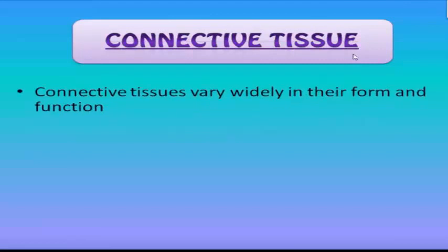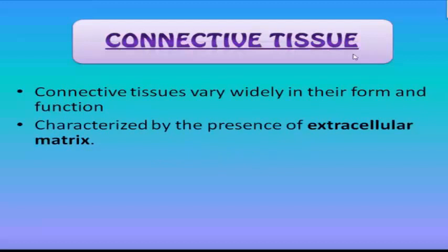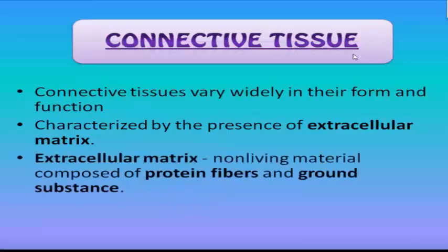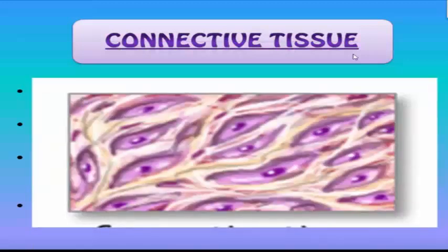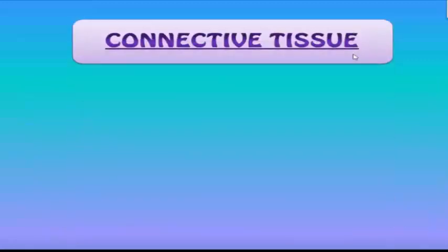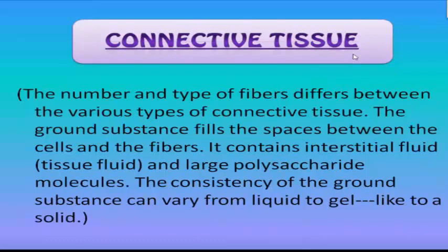Connective tissues vary widely in their form and function. They are characterized by the presence of extracellular matrix — a non-living material composed of protein fibers and ground substance. Protein fibers include collagen, which gives strength, and elastin, which gives flexibility. The ground substance fills the spaces between cells and fibers, consisting of interstitial fluid, tissue fluid, and large polysaccharide molecules, and can vary from liquid to gel-like to solid.